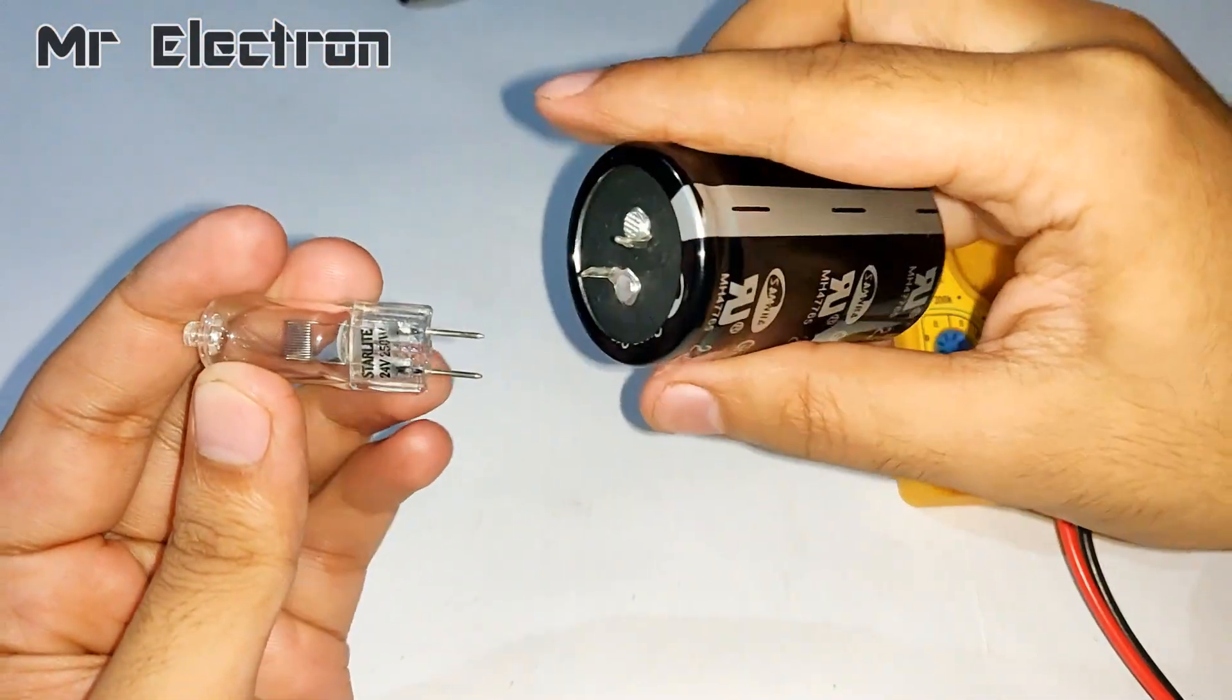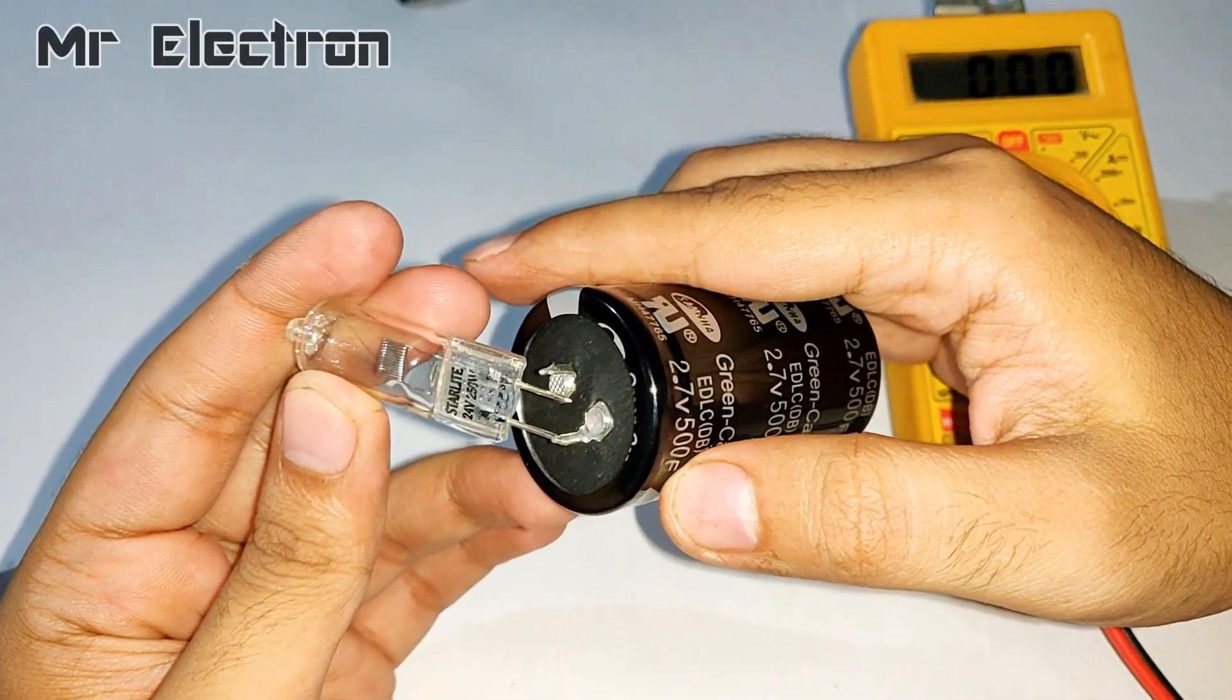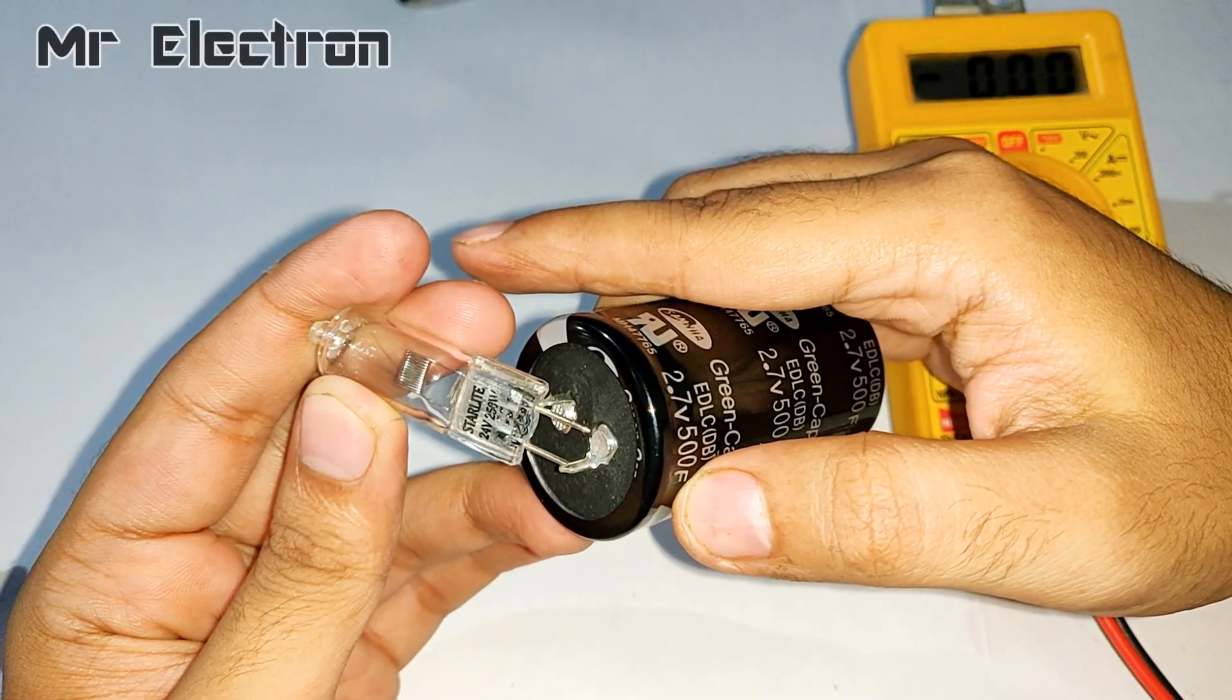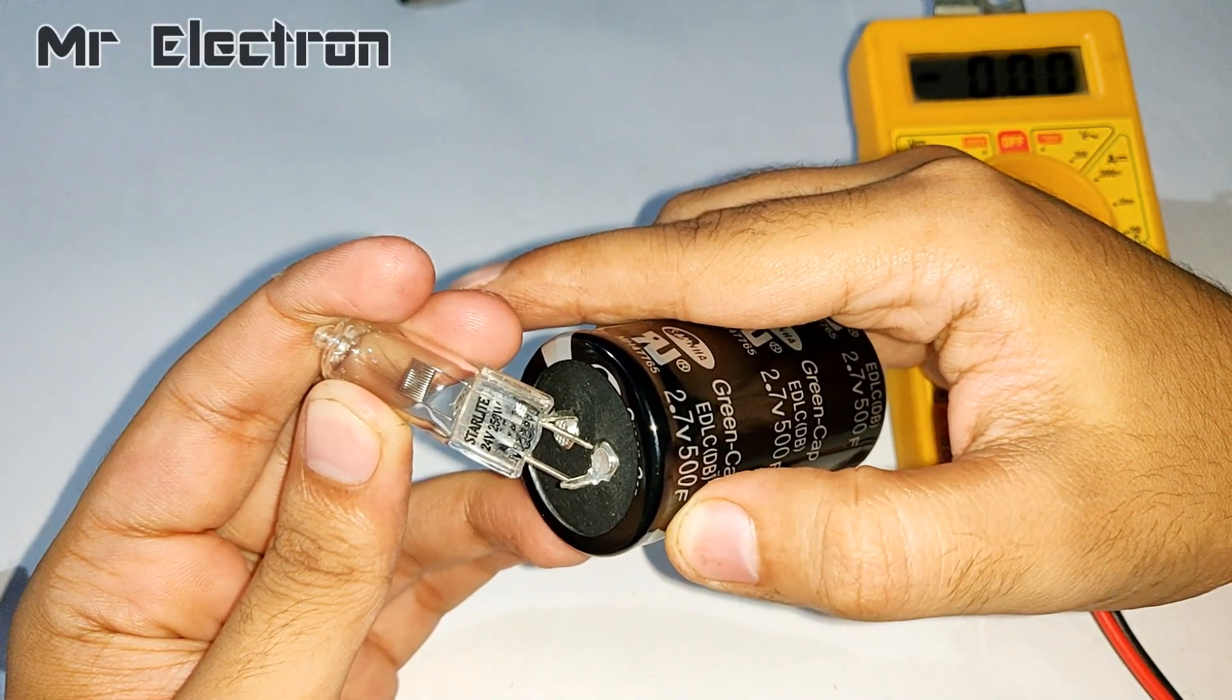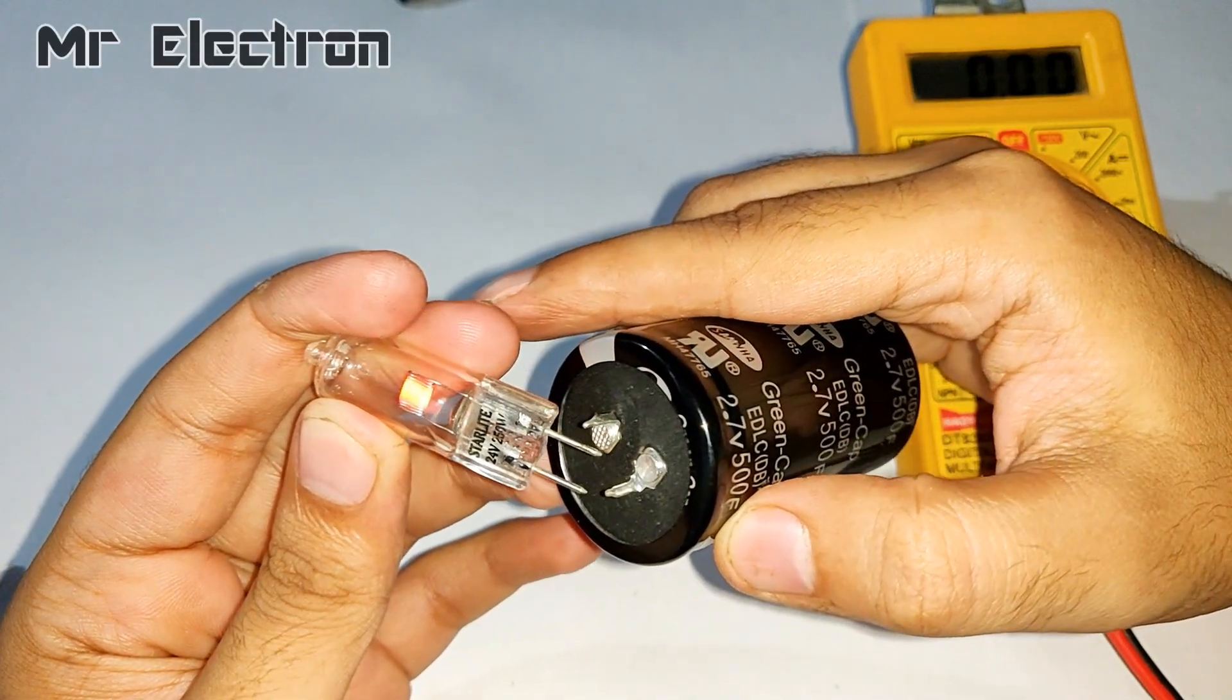Now guys this is a 24V 250W incandescent reflector bulb. You can see how thick the filament is inside the bulb. It is so thick that it is taking time to glow and retains that heat for some time.